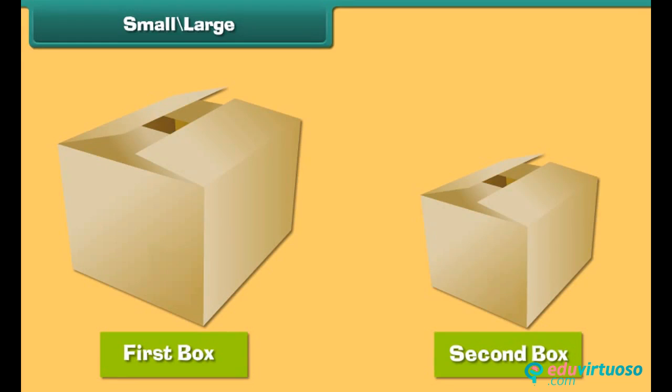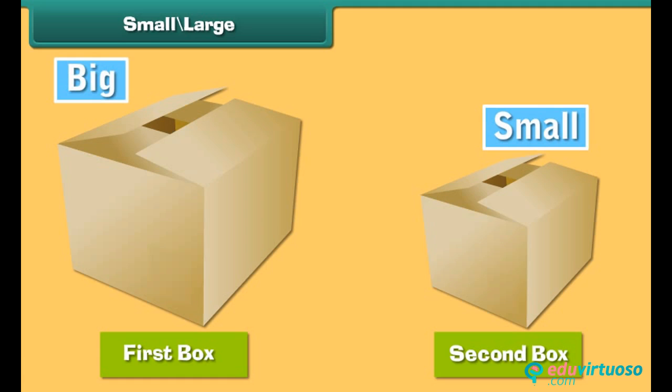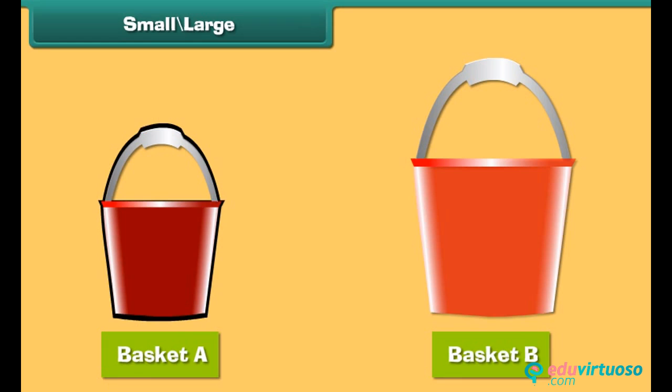Here are two boxes, but they are of different sizes. When two things are not of the same size, we compare them. We use the word 'small' with the object which looks shorter, and the word 'big' with the object which is larger.